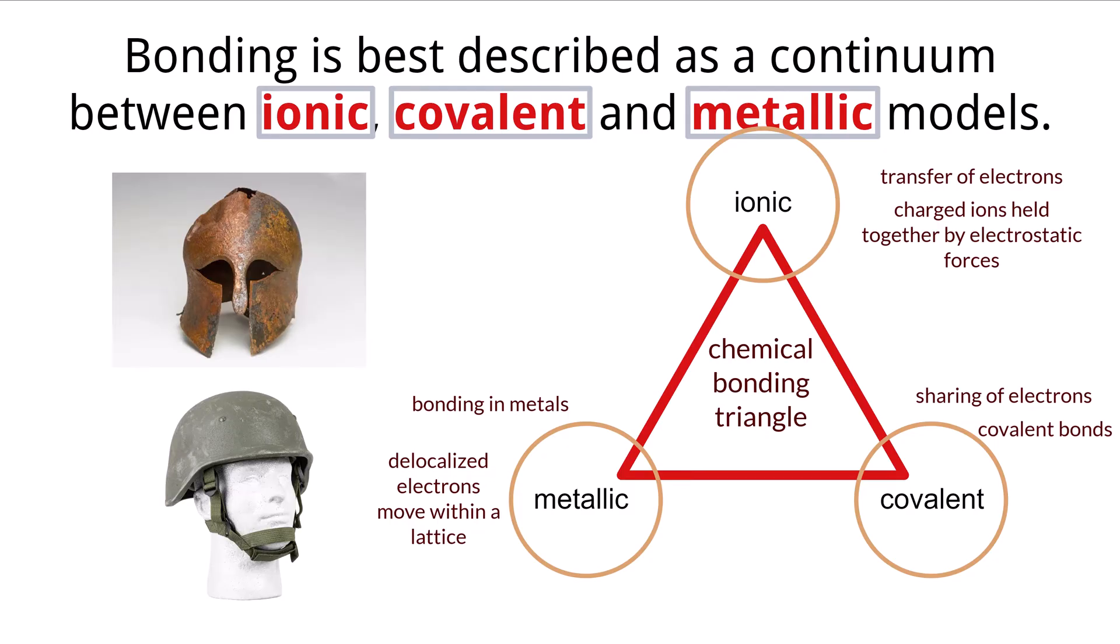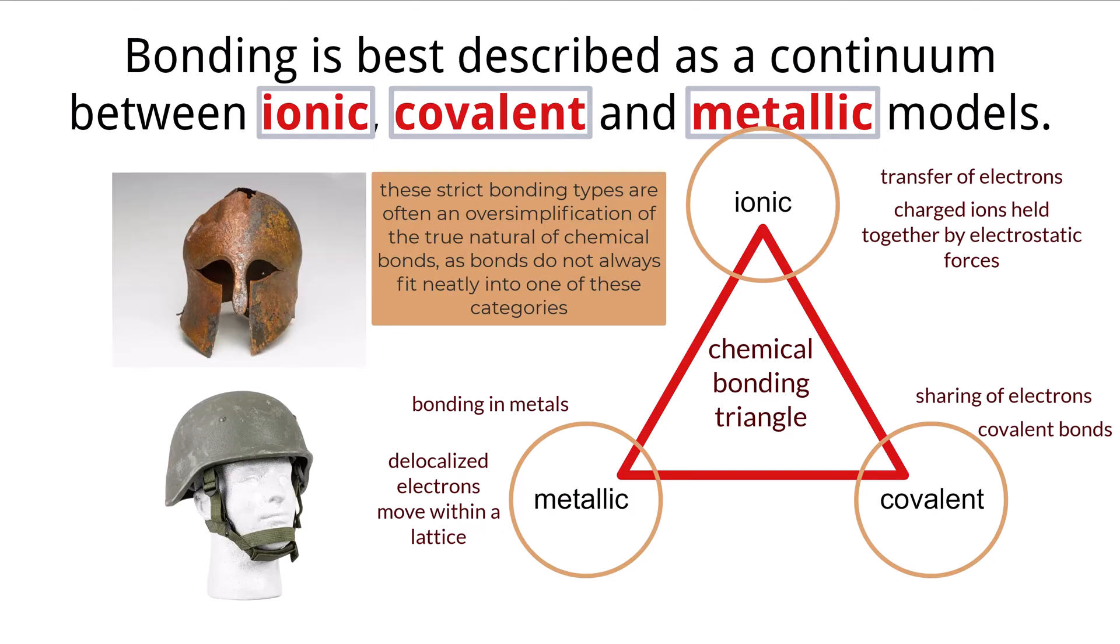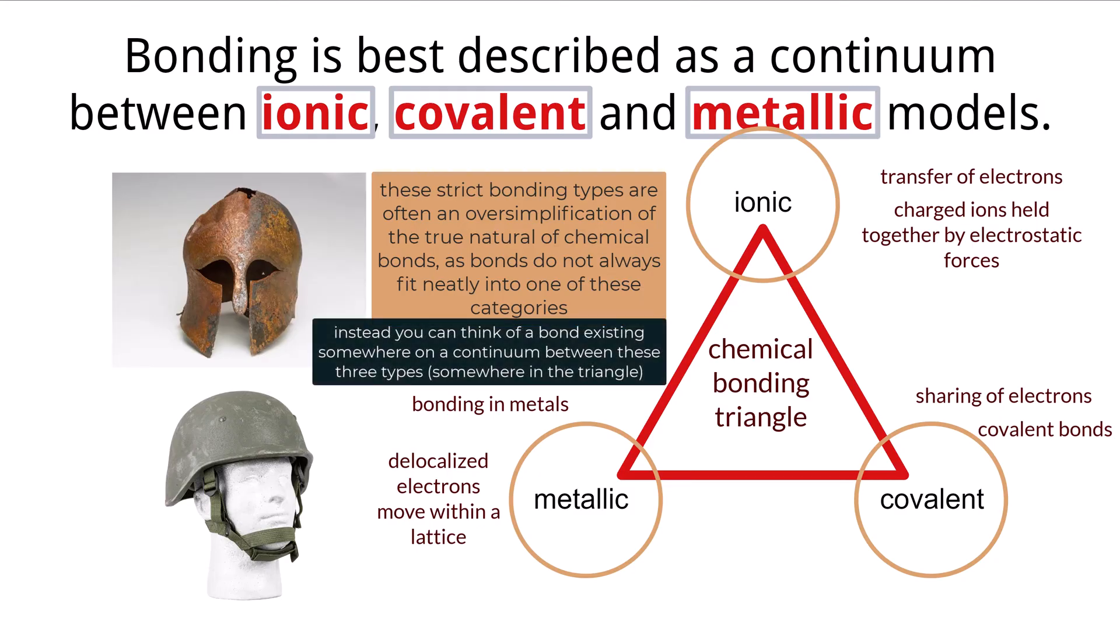While these three models provide a framework for understanding diverse types of chemical bonding, there can be an oversimplification when describing chemical bonds. Therefore, it is best to think of chemical bonding as a continuum where different bonding types are present in different molecules to a certain degree. Almost all molecules in nature don't exactly fit within one of those models exclusively.